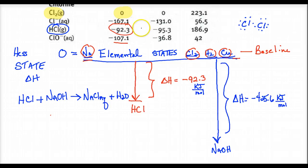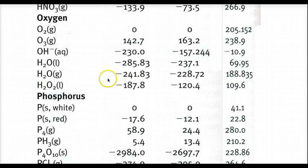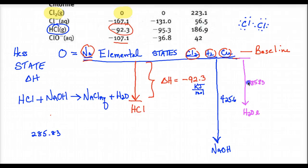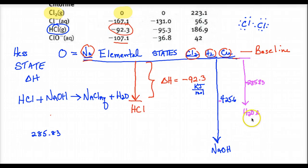Let's go find the heat of formation of water — negative 285.83 kilojoules per mole. And negative 425.6 kilojoules per mole for sodium hydroxide. So H2O liquid is not as stable as NaOH solid. Crystals in a regular repeating geometric pattern called a crystal lattice are going to be much stronger, so this makes a lot of sense.